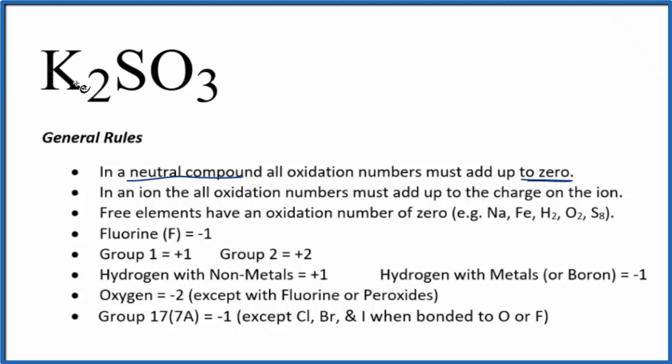When we look at potassium, that's in group one on the periodic table. Elements in group one will have a plus one oxidation number, so each of these potassium atoms is going to be plus one.